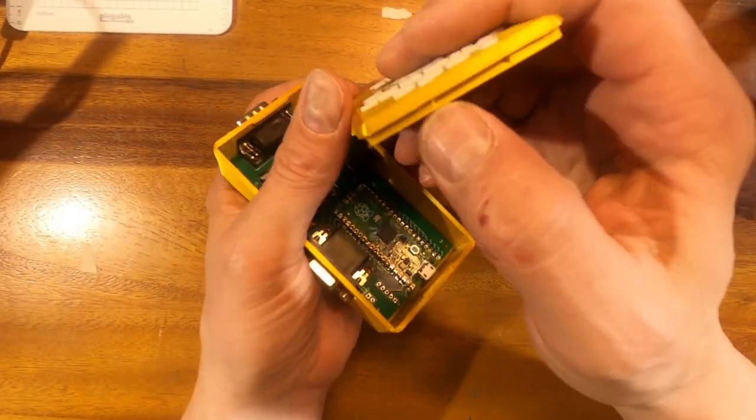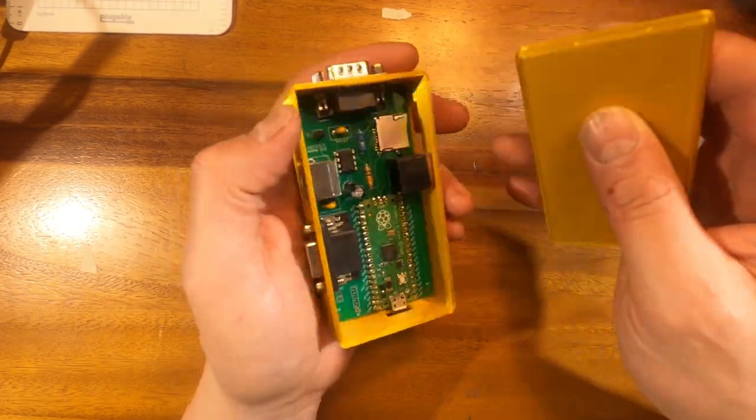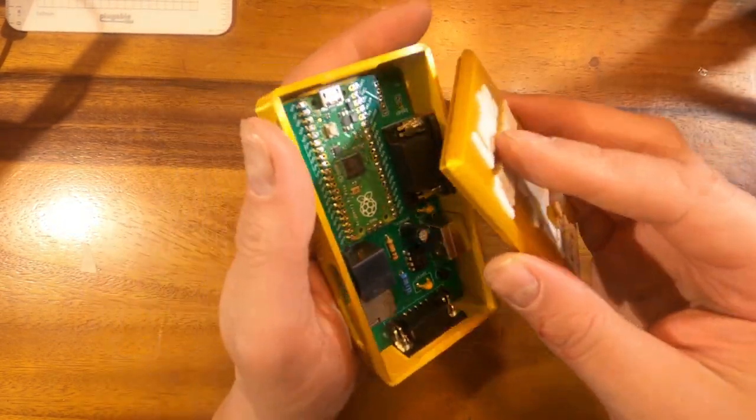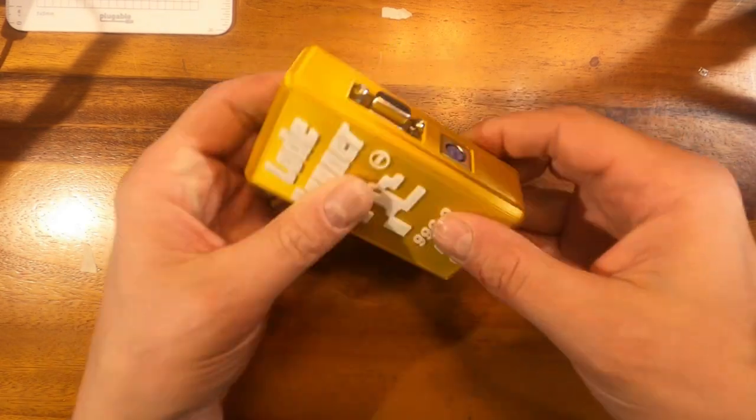The lid is also keyed in one direction and that's basically it. The kit does come with some little screws so you might want to put those in first. Although you kind of don't need them, it's pretty snug.